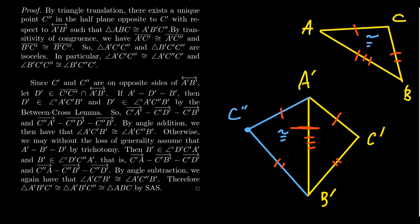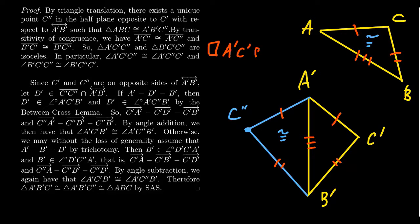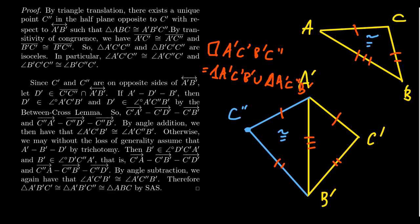I want to note that this diagram is one of our first examples in our lecture series of a quadrilateral. A quadrilateral — such as A'C prime B'C double prime — is just going to be a union of triangles. Specifically, it's the union of triangle A'C'B' with triangle A'C double prime B'. But it's not just some arbitrary union of triangles: it has to be a union where the two triangles share a common edge — in this situation, that common edge is segment A'B' — and they don't have any interior points that overlap.